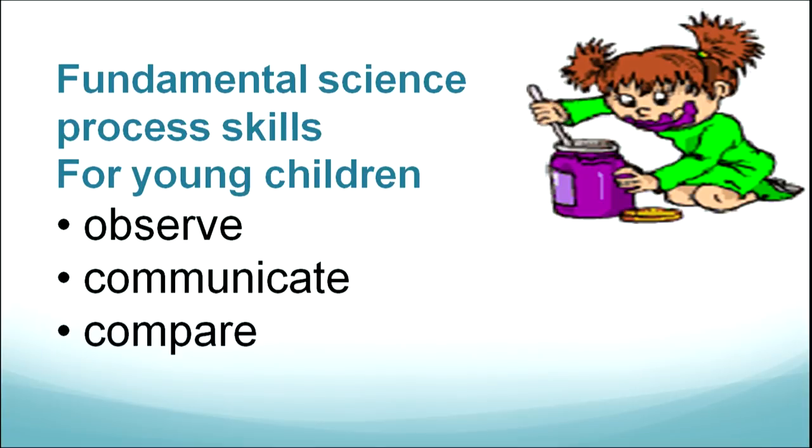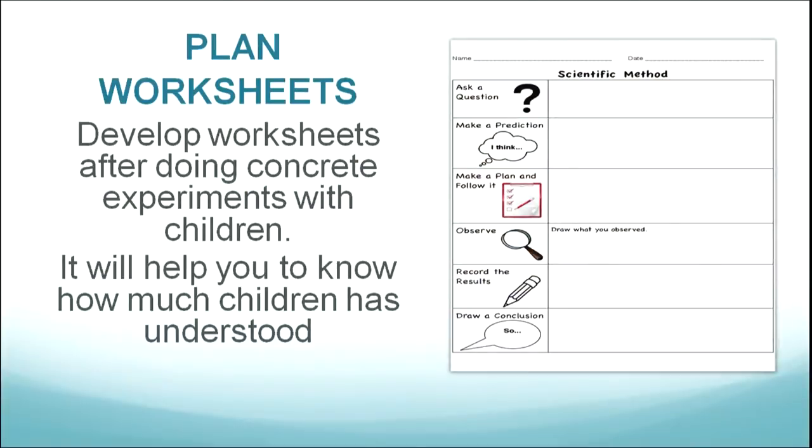Fundamental science process skills are a must for children. The most important are observation, communication, and comparison. Encourage children to observe, then communicate what they are learning, then compare. After doing experiments, plan abstract worksheets for children — but only after doing the concrete experiments first. Worksheets help you assess how much children have understood and serve as useful assessment tools.